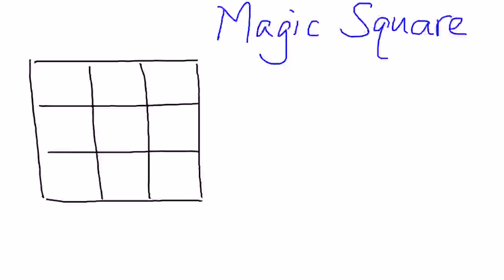For those of you who haven't heard of this term, magic square basically means that you are given a grid of 9 boxes, and also the first 9 numbers: 1, 2, 3, up to 9.